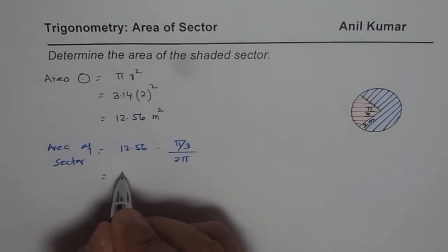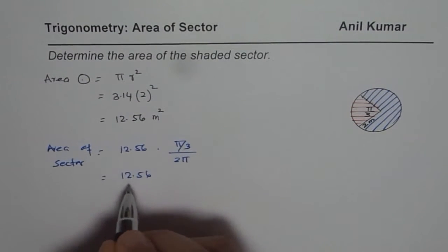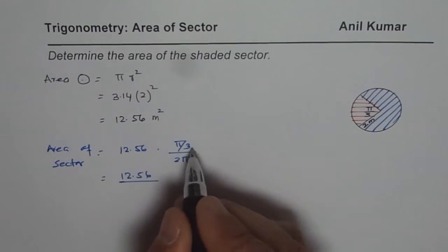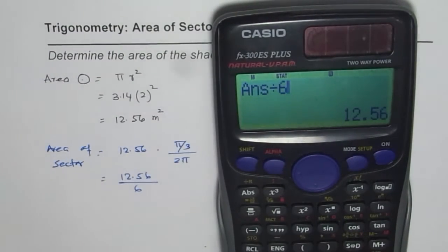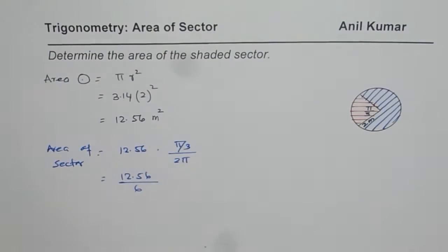So it is equal to 12.56 divided by pi and pi. 3 comes here, so divide by 6. We will just divide this by 6 to find the answer. So that is 2.09.